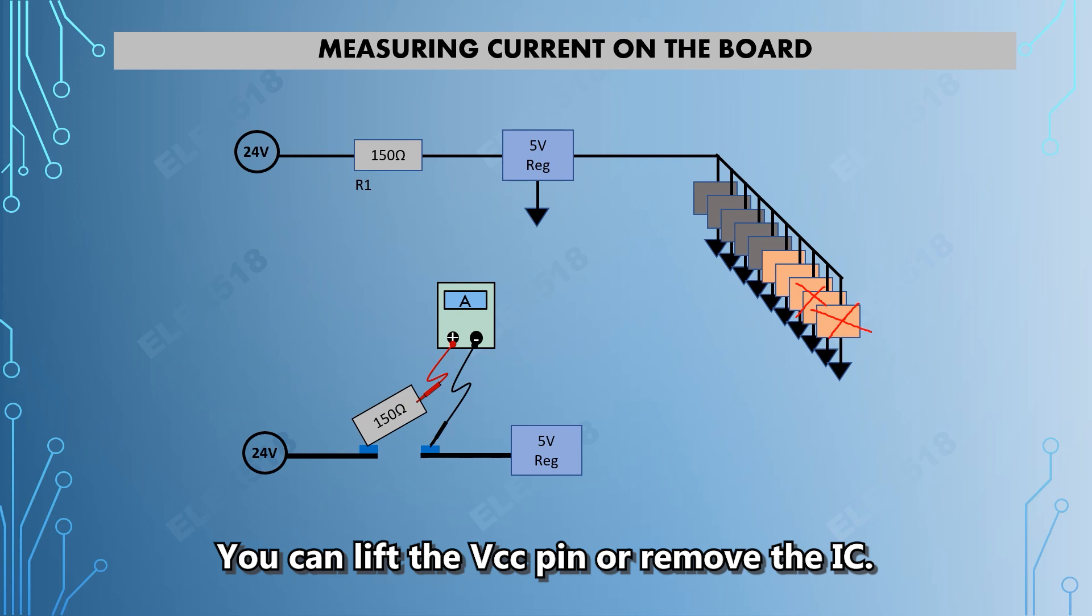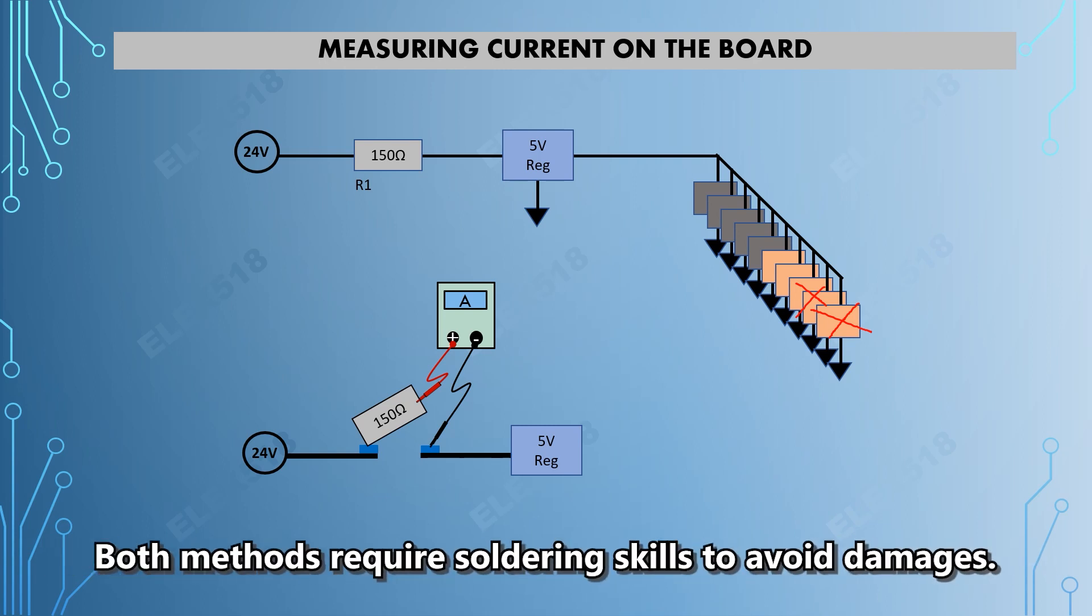You can lift the VCC pin using a sharp tweezer and soldering iron, or you can directly remove the IC using hot air. But both methods require advanced soldering skills; otherwise, you may damage the pin or the solder pad.